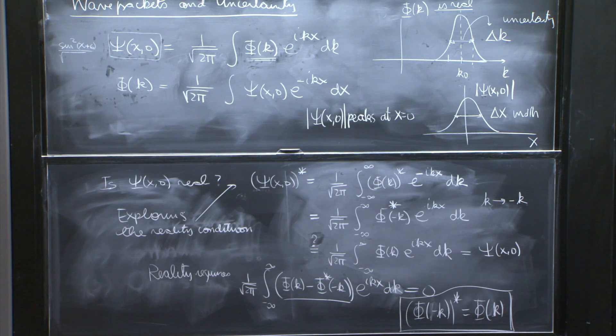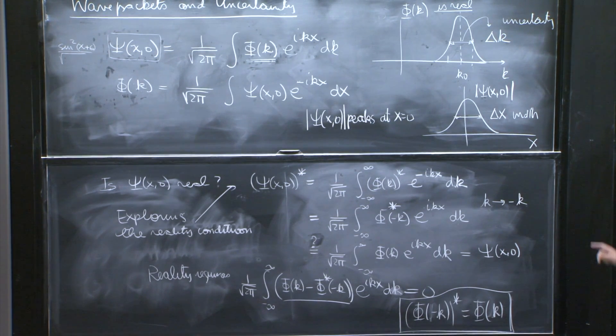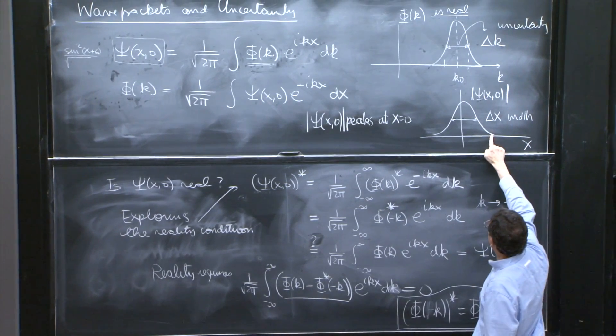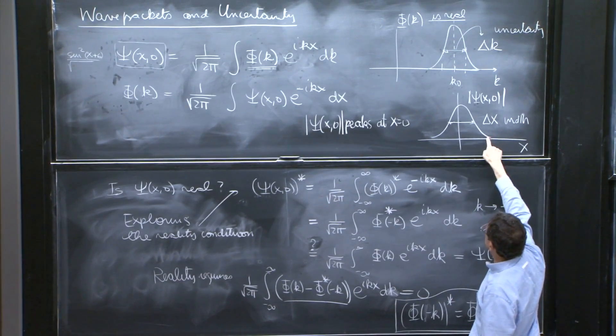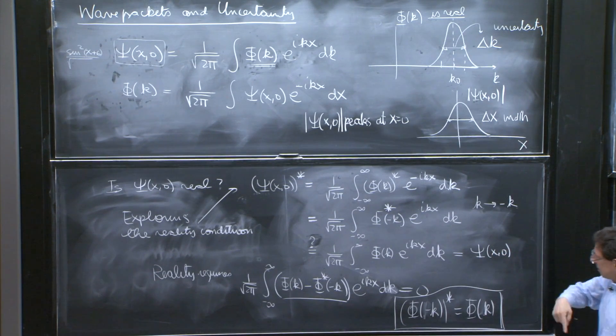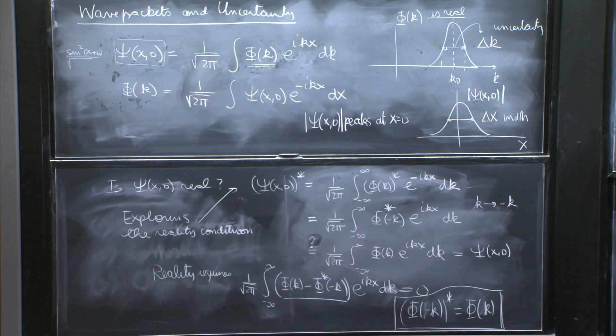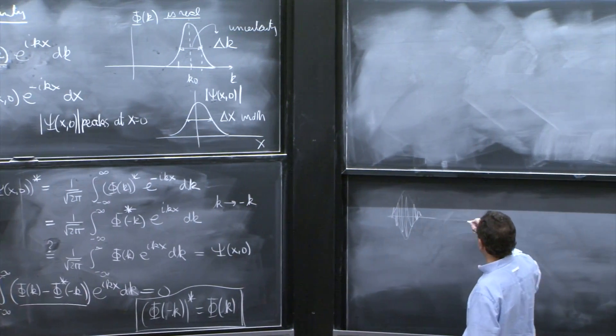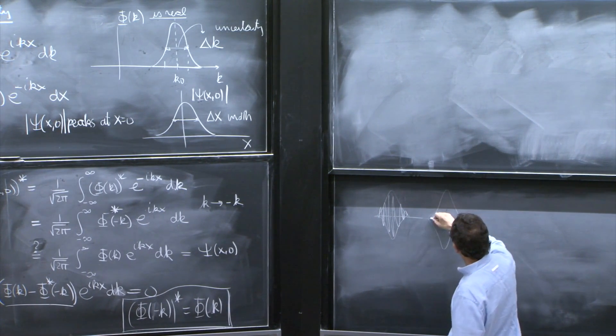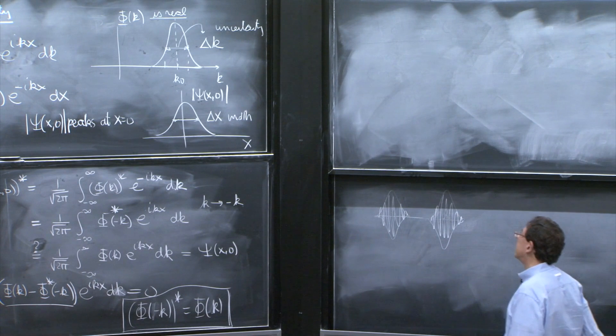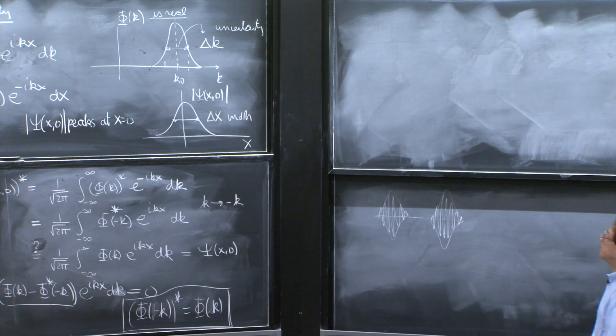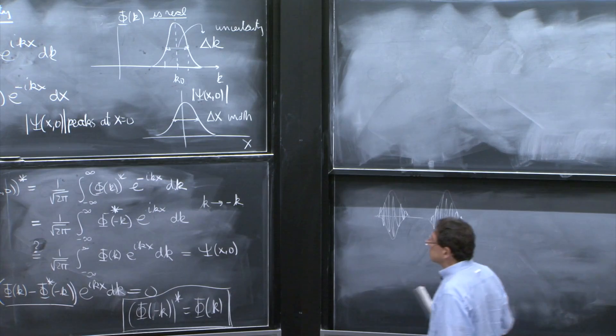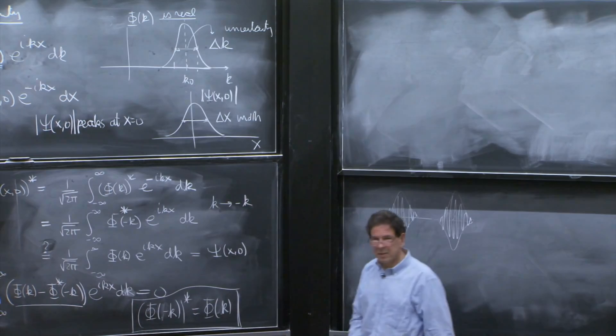If you were plotting not the absolute value, but the real part and the imaginary parts of psi, you would see some sort of funny waves. I think if you were plotting the real part, for example, you would see a wave like that. And if you were plotting the imaginary part, you presumably see some other wave like that. And the absolute value, it's much nicer and simpler.